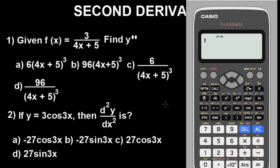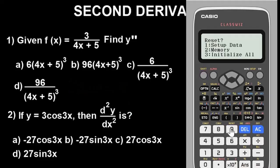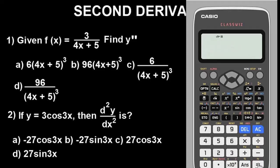To reset everything back to default mode, you simply clear it. The procedure is the same with the white FX-ES Plus calculator. Press the Shift button then 9 for the clear instruction. Press 3 to initialize — and the calculator is now all clear.